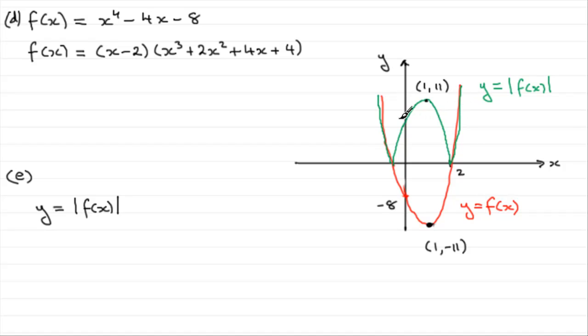And what else do we know? This point here, where it crosses the Y axis, instead of being at minus 8 would be at plus 8. So, that should give you some idea, I hope, of the two graphs.